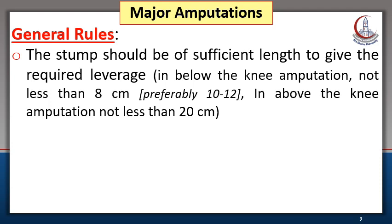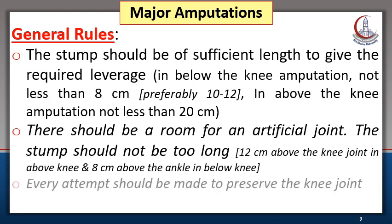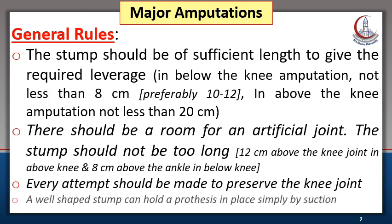In above-knee amputation, the stump should not be less than 20 cm. There should also be room for an artificial joint, so the stump should not be too long either — 12 cm above the knee joint in above-knee amputation, and 8 cm above the ankle joint in below-knee amputation. Every attempt should be made to preserve the knee joint. A well-shaped stump can hold a prosthesis by simple suction with modern prosthetic devices.